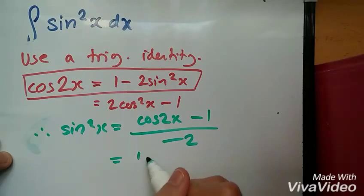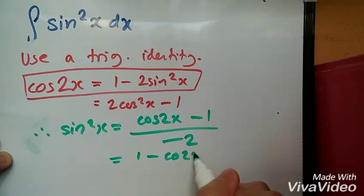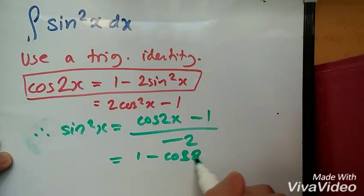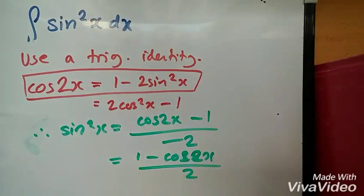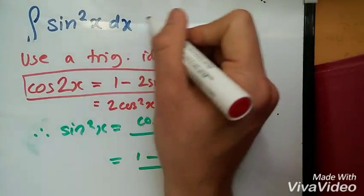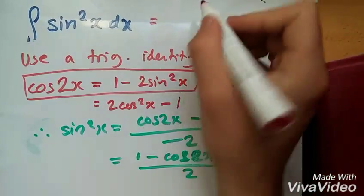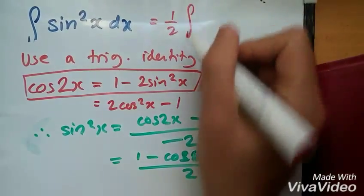Times by minus 2, so it'll be 1 minus cos 2x over 2, okay? And now we're going to integrate this equation and replace it here, so what we really have is taking one half outside, the integral of 1 minus cos 2x dx.